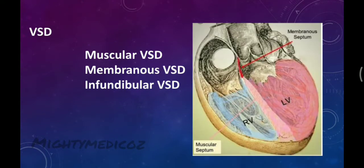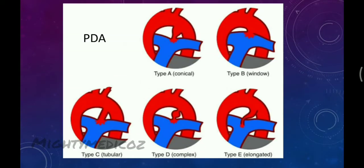The next part is PDA — patent ductus arteriosus. In PDA, there are classification types: type A, B, C, D, and E. We have some classification criteria for PDA.